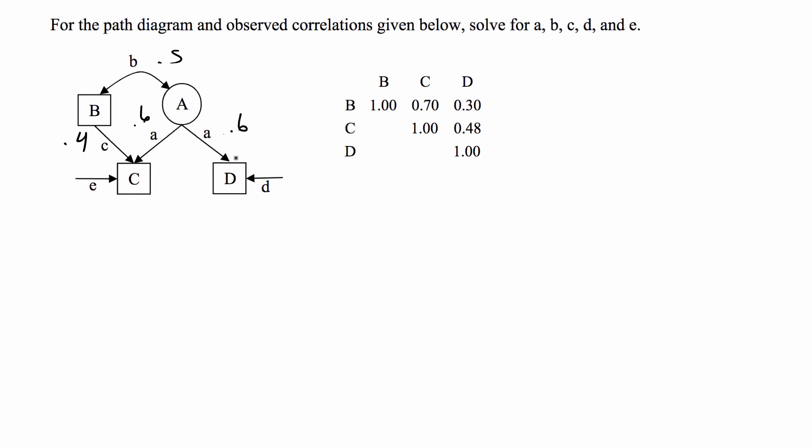So D is a little bit more simpler than C because this only has A pointing to it, the variable D. So if we do the variance of A,D, this is going to be equal to A times R_A,D. And R_A,D is just A.